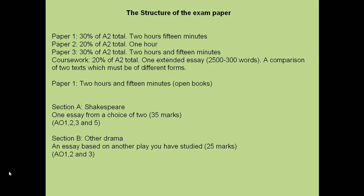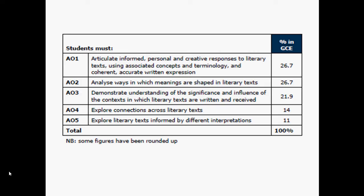Section B is another drama piece. Section A focuses on Assessment Objectives 1, 2, 3, and 5, whereas Section B, which is worth 25 marks, covers AOs 1, 2, and 3. So what does AOs 1, 2, 3, and 5 mean in terms of assessment objectives?